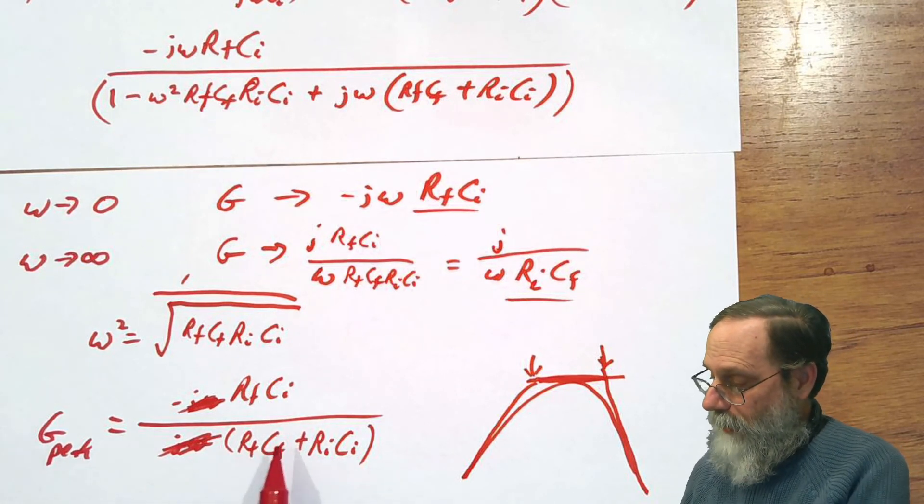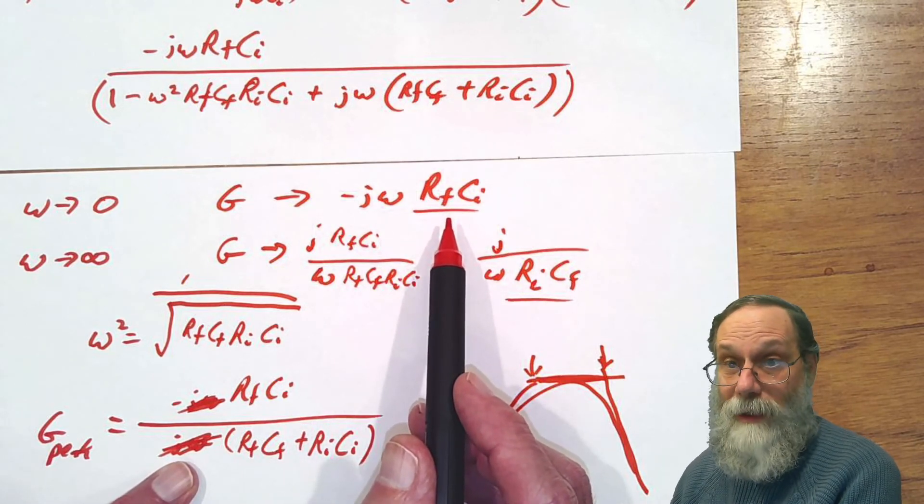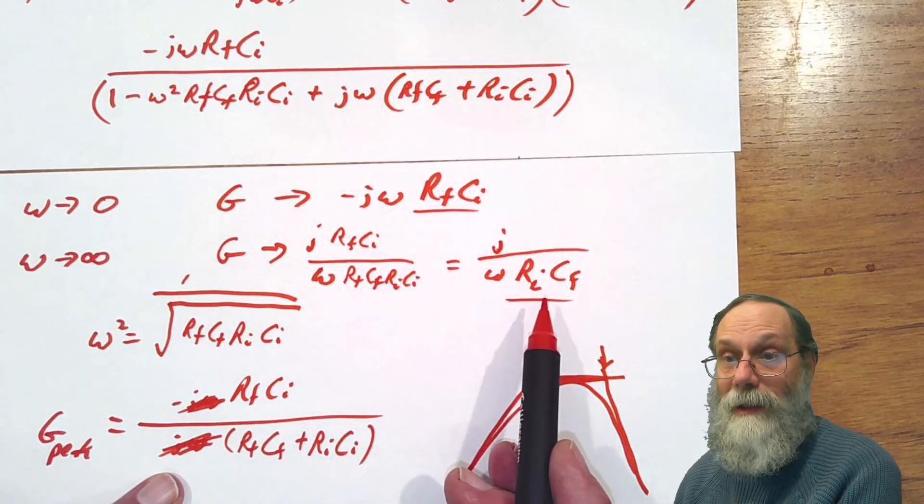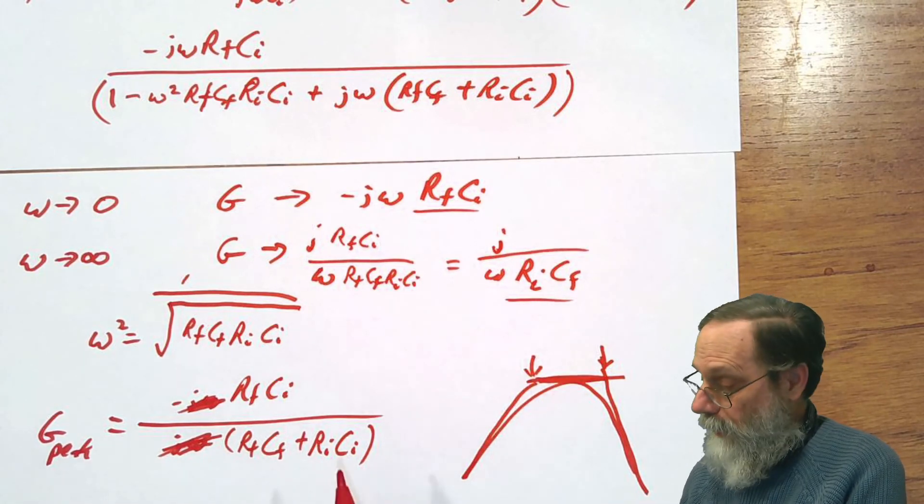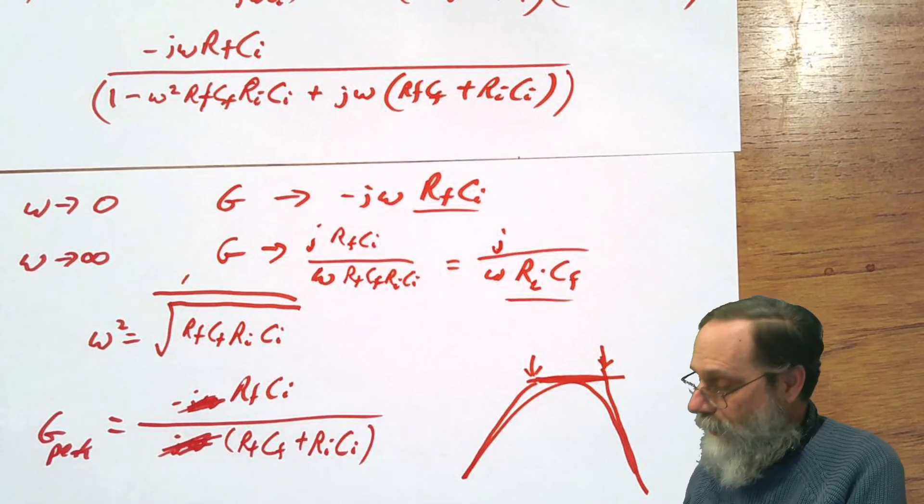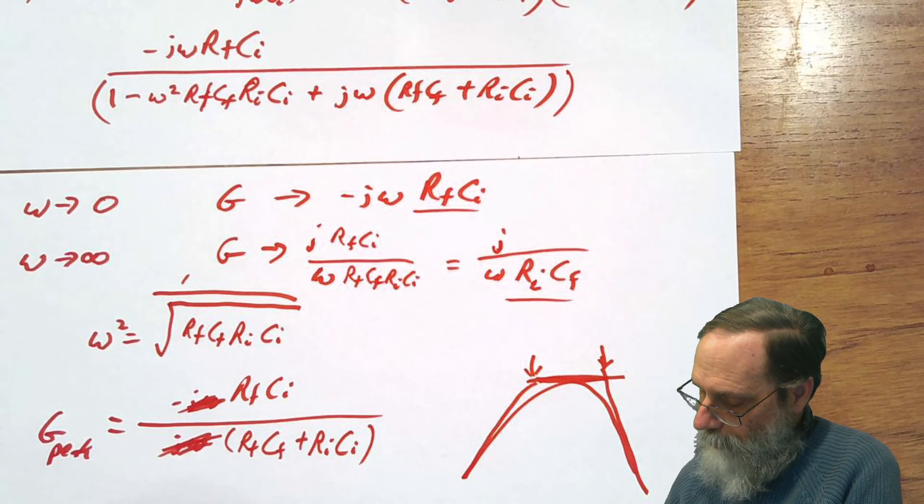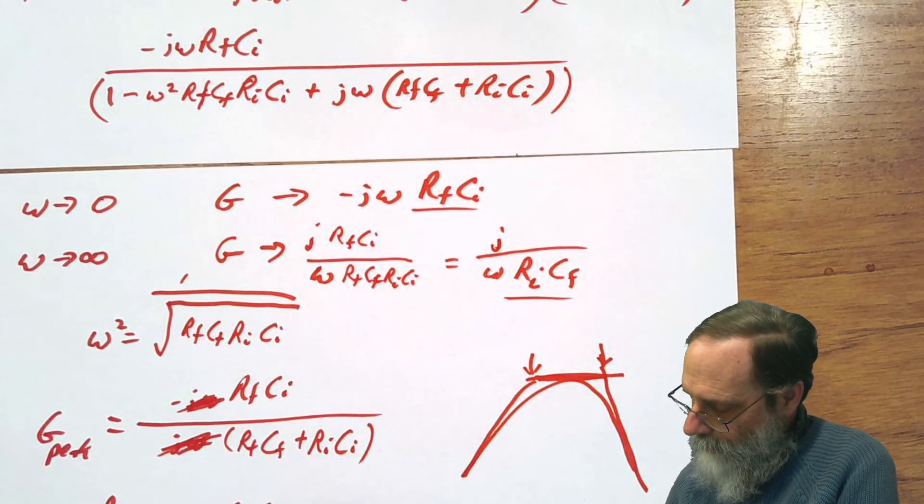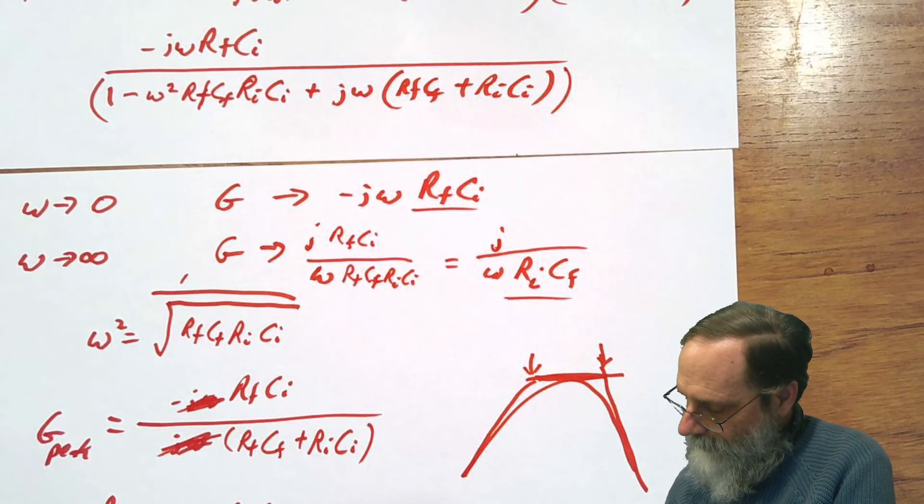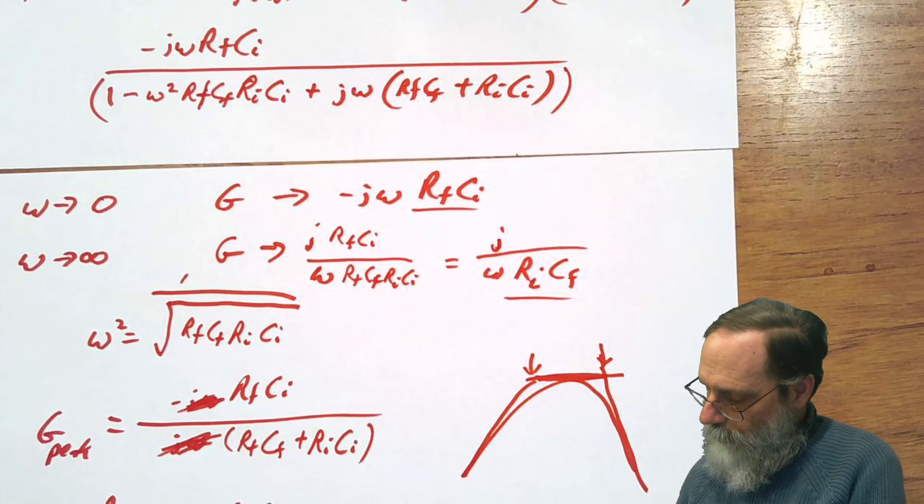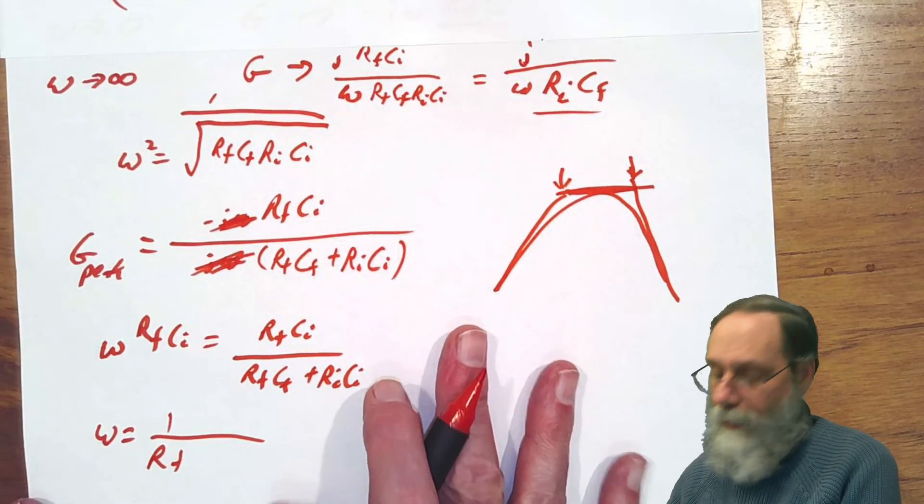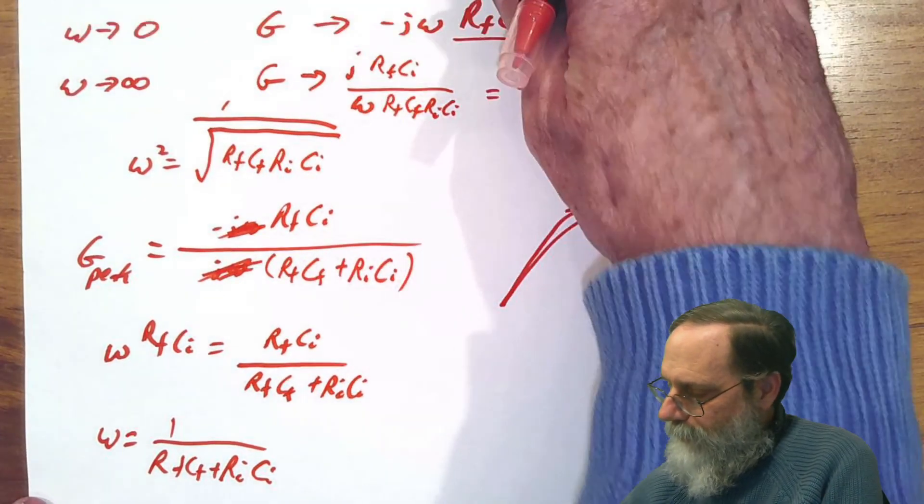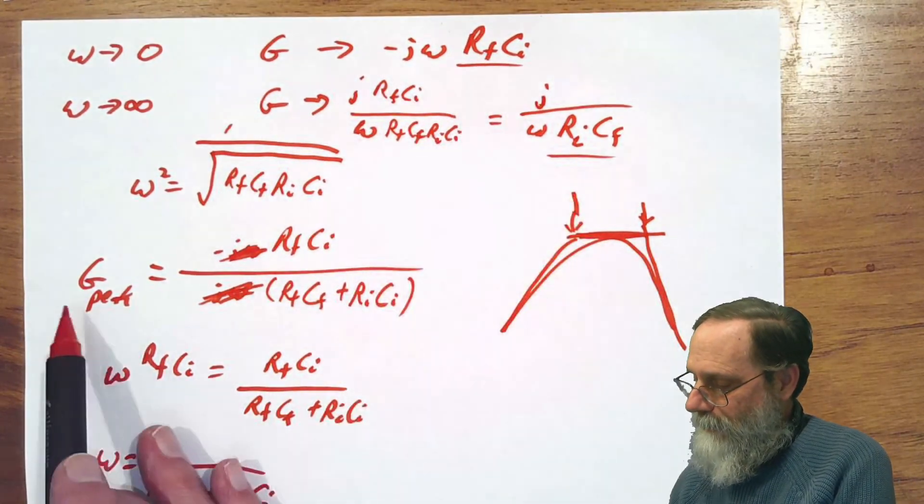You can figure out what that is by looking at where does the peak gain equal the asymptotic gain. They're not going to be the same gain because this is purely real and these are purely imaginary in the asymptotes. But if you look at the magnitude of them, the minus j and the minus sign here don't really matter. So we're looking for where omega Rf Ci equals Rf Ci over Rf Cf plus Ri Ci. And we can see that's just omega equals one over Rf Cf plus Ri Ci, and that's going to be this corner where the first line meets the horizontal peak.